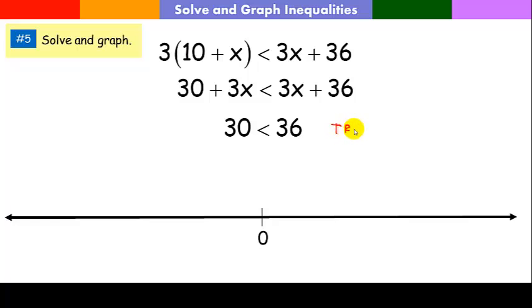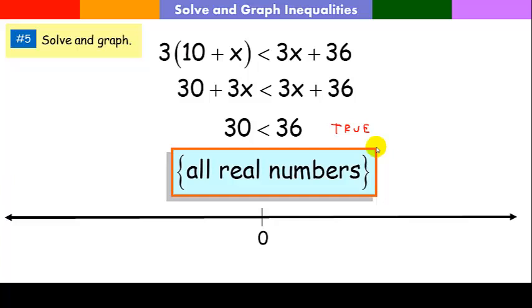Since that's true, what that means is all real numbers will solve this. That means no matter what number I plug in to here and here, this side will always be larger than this side. Always. No matter what number I use. That's what it means.